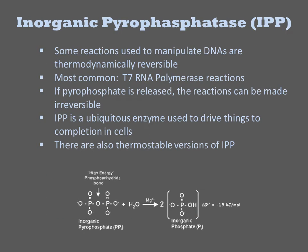Some reactions used to manipulate DNAs are thermodynamically reversible. For example, T7 RNA polymerase will start degrading RNA if pyrophosphate accumulates in the reaction. Pyrophosphate is two phosphates linked together and is often called inorganic phosphate. For reactions that release pyrophosphate, the reactions can be made irreversible by addition of inorganic pyrophosphatase, or IPP. IPP is a ubiquitous housekeeping enzyme used to drive things to completion in live cells. There is also a thermostable version of IPP for use in high-temperature reactions such as PCR, though typically you do not use this in a PCR.